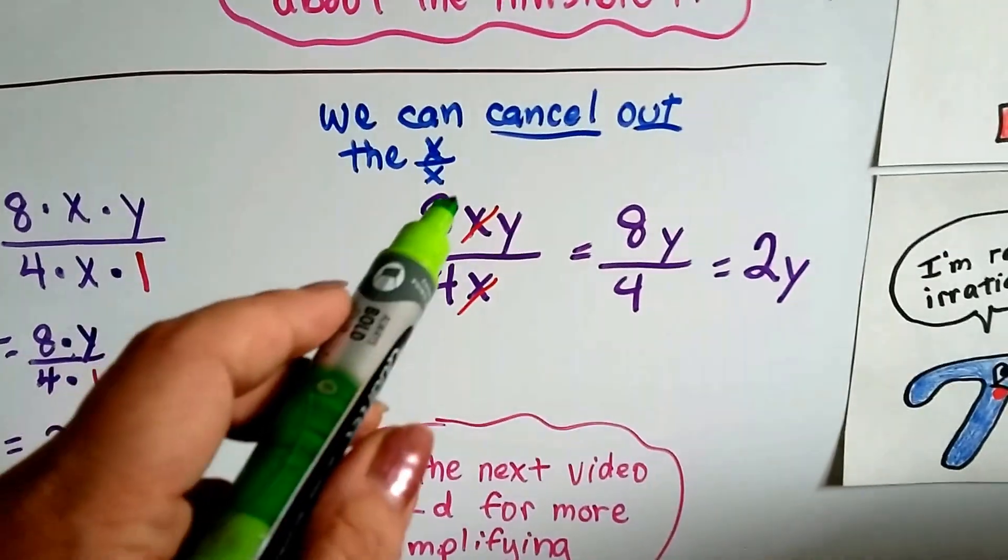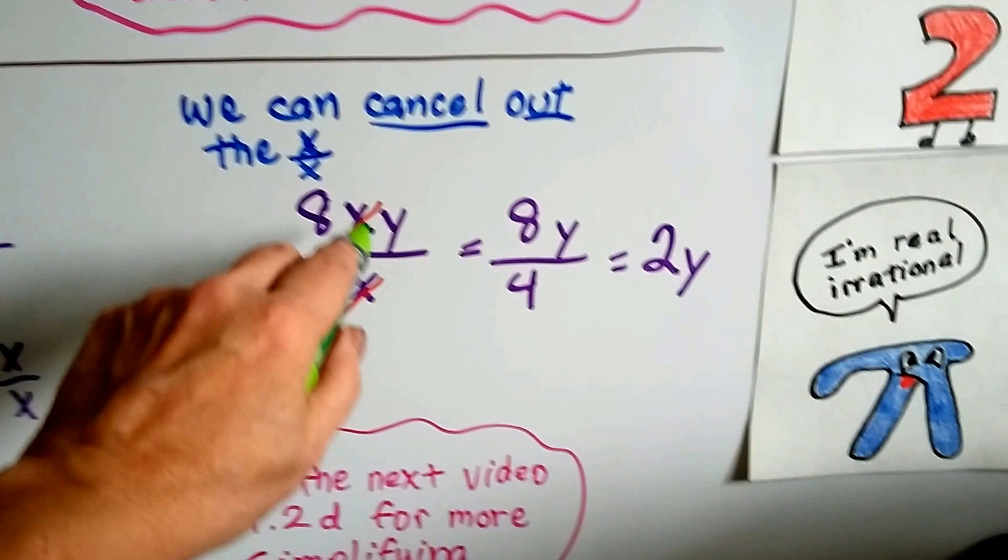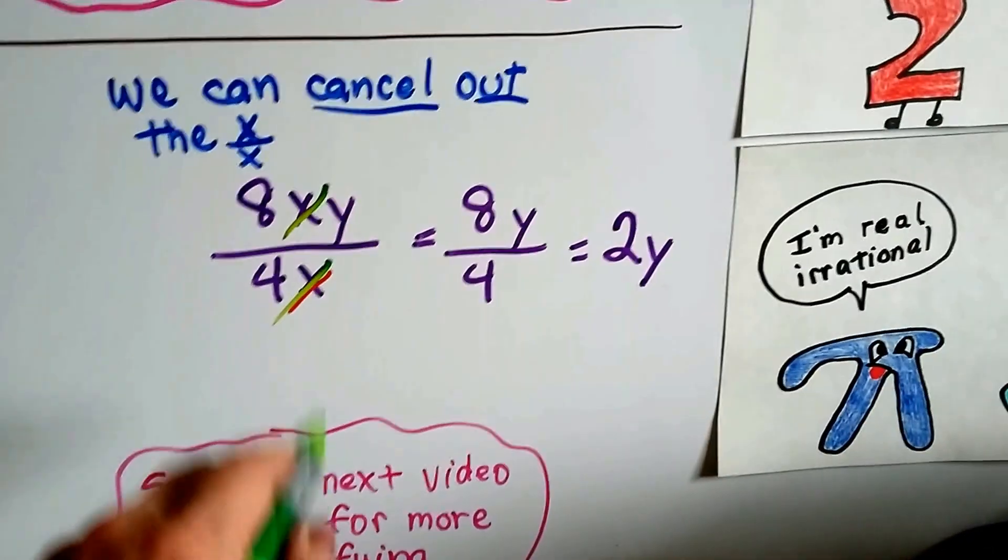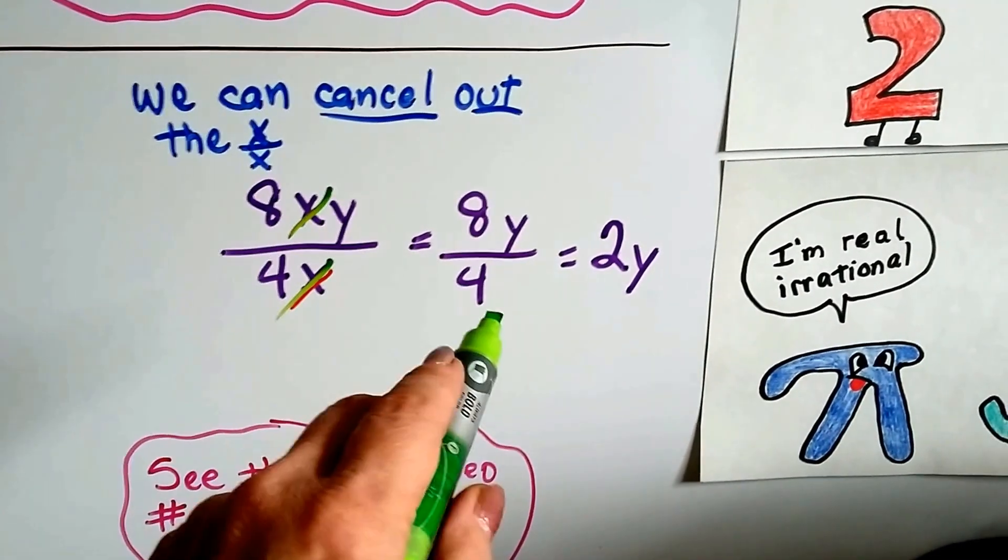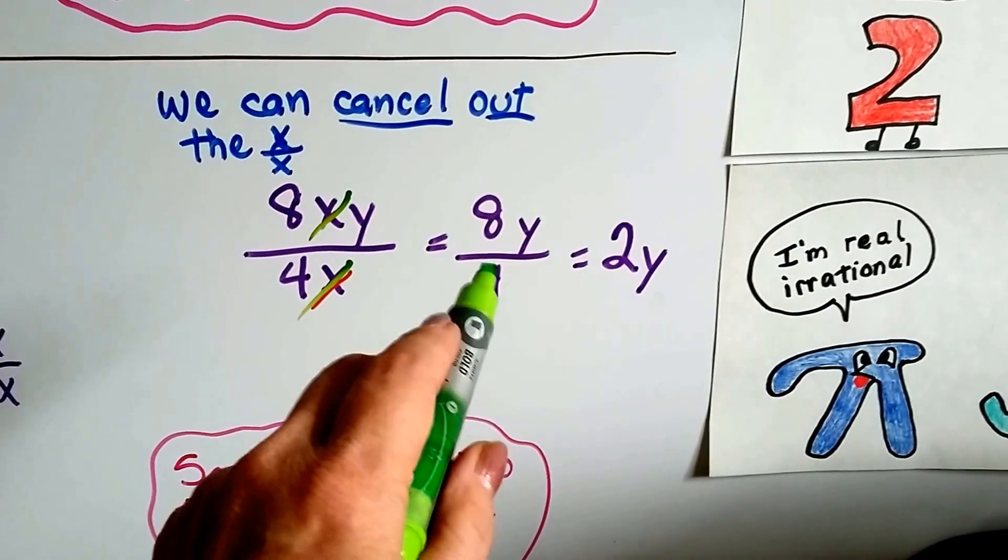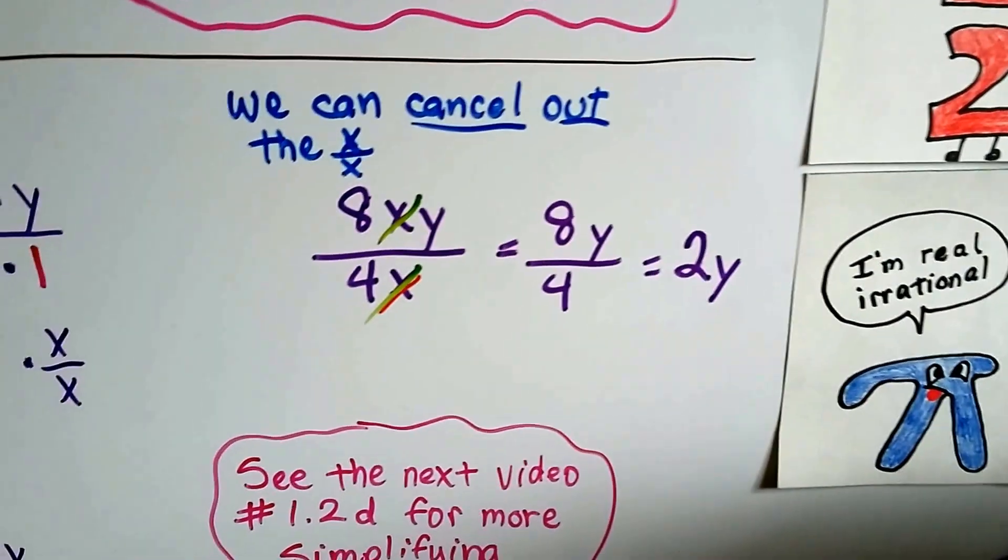Another way we can look at it is, just by canceling out, if we've got 8xy over 4x, we just cancel out this x and this x, and we're left with 8y over 4. And when we reduce this, 4 goes into 8 2 times, and the y is still there.